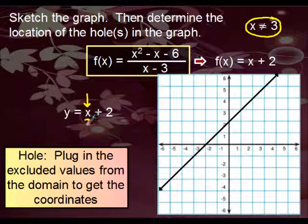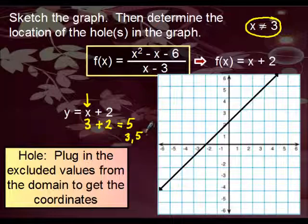So plugging in, you get three plus two, and what we wind up with is five. So therefore, three comma five is the location of the point where there's going to be a hole in the graph. And that's all there is to it.